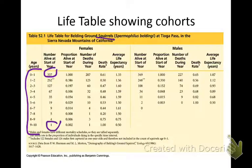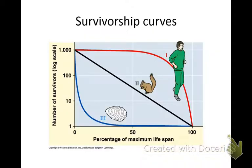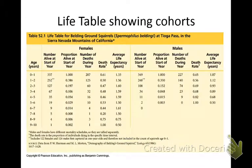Population growth occurs by immigration — moving in. Decline occurs by emigration — moving out. You can remember that because of the word 'exit.' There was also a life table that showed specific age traits.